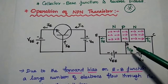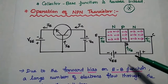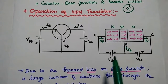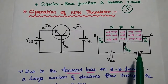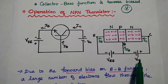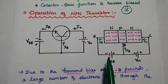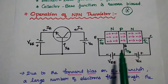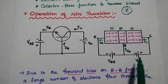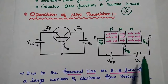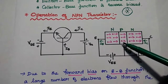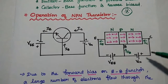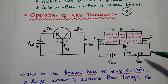This is the diagrammatic representation of transistor biasing in NPN transistor. In this, the emitter-base junction is forward biased and the collector-base junction is reverse biased. Forward biased means negative to negative, positive to positive — the terminals are connected like this. Reverse biased means the terminals are reversed: positive to negative, negative to positive.